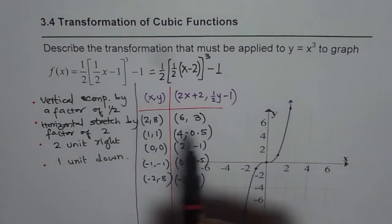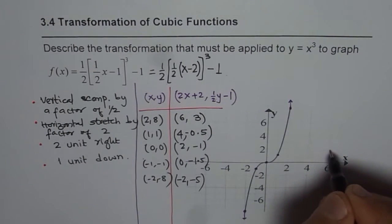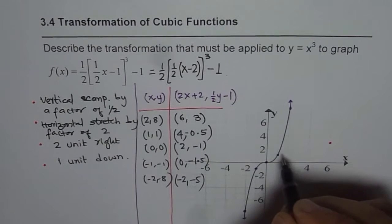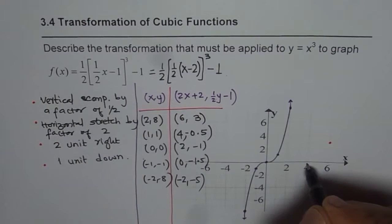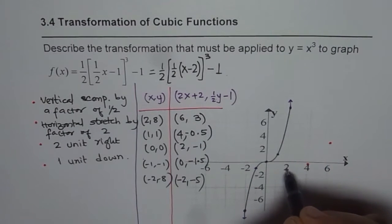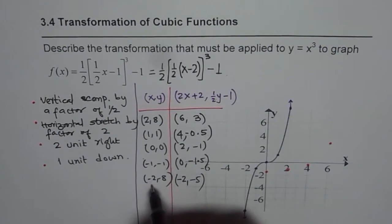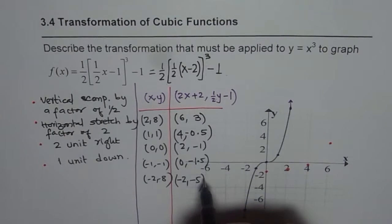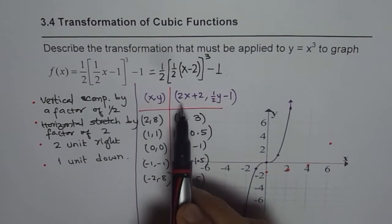So let us begin by plotting these points. 6, 3, 6, 2 and 1, 3, that is the first point. Then we have 4 minus 0.5. At 4, we have minus 0.5. 2 minus 1, 2 and minus 1. 0 minus 1.5. And minus 2, I mean minus 1, minus 1. I think minus 1. If I do minus 1 here, I get 0. 0 minus 0.5,